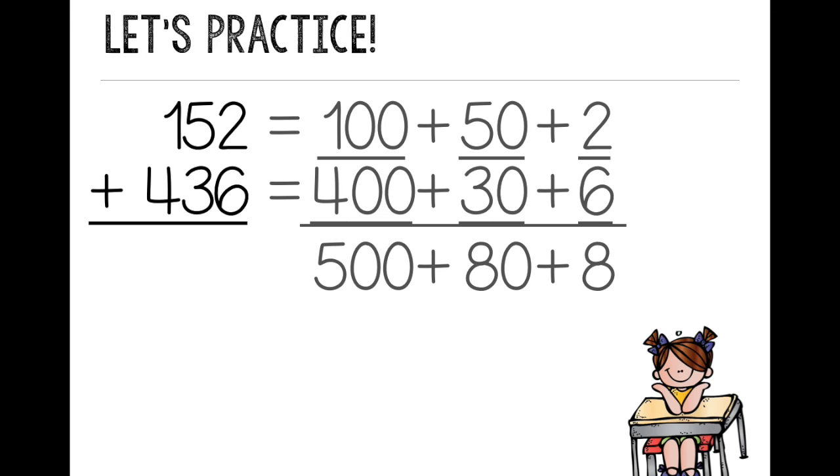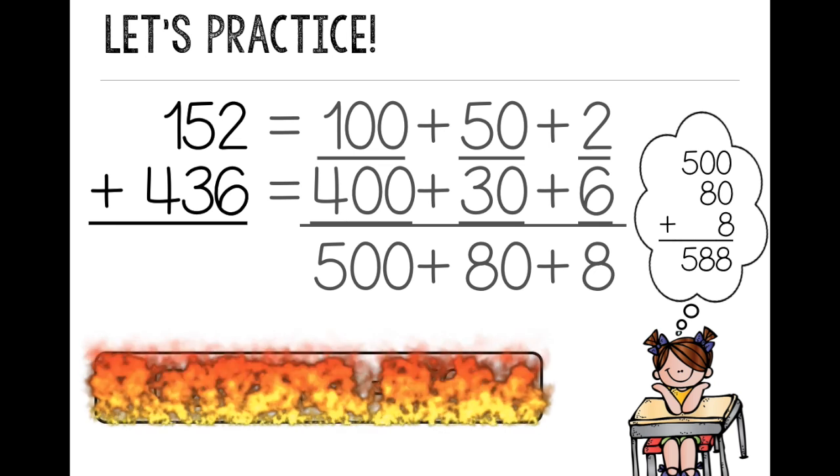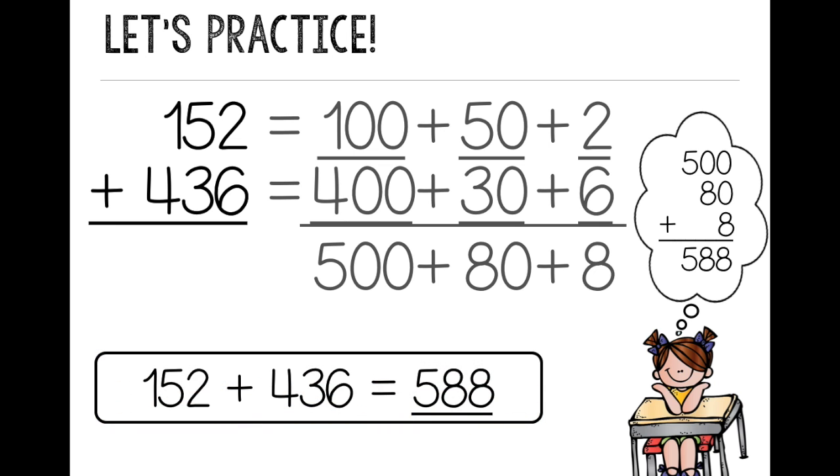If you need to, you can write this vertically. 500 plus 80 plus 8 and then add it up. 588. So 152 plus 436 equals 588.